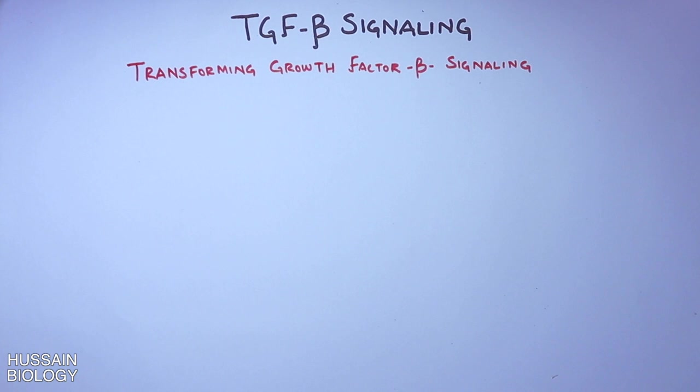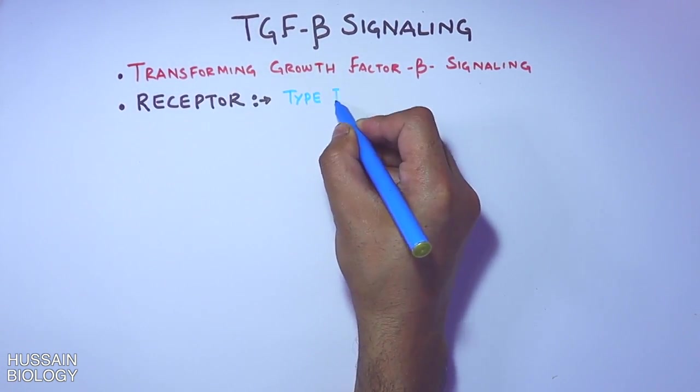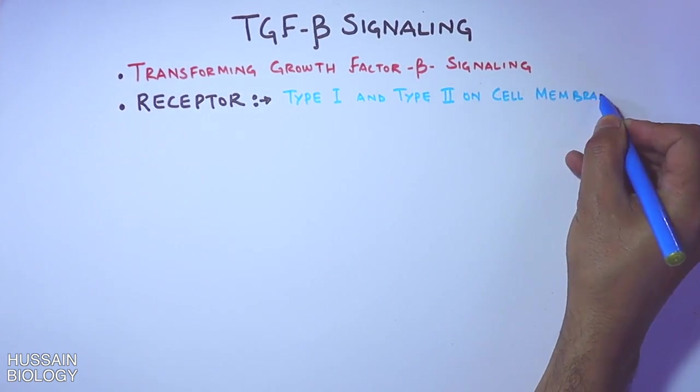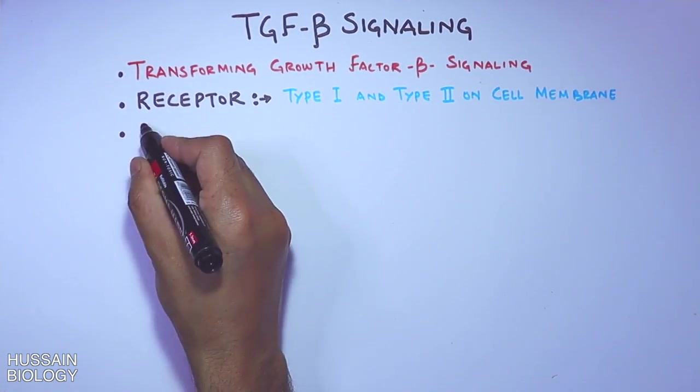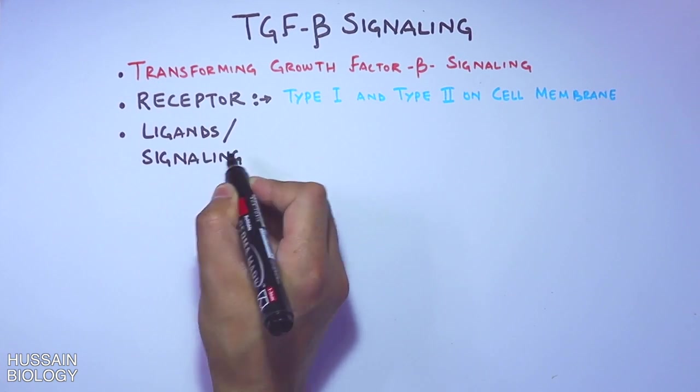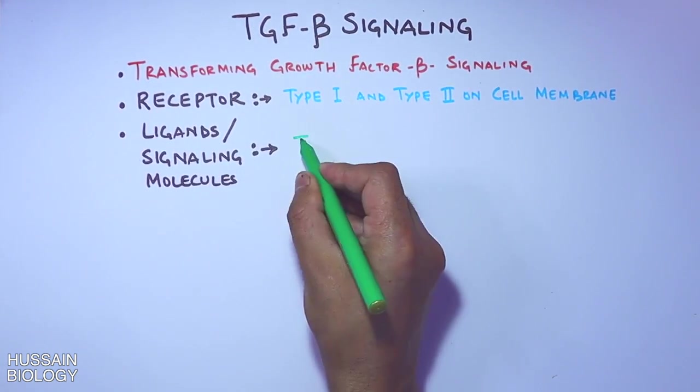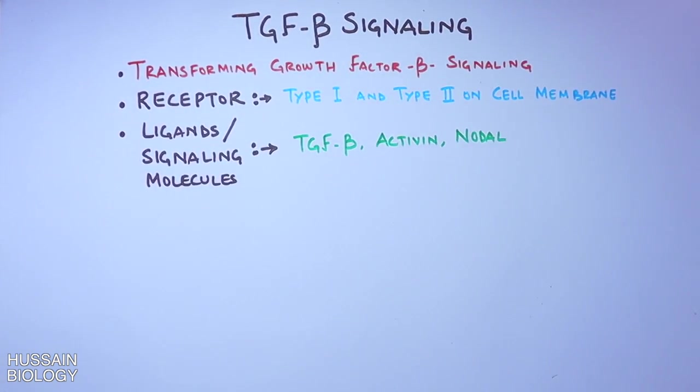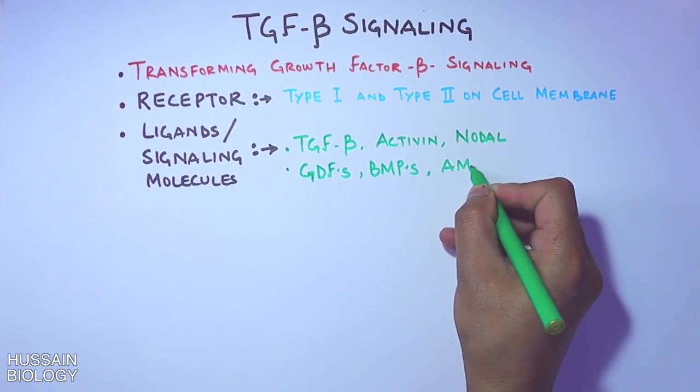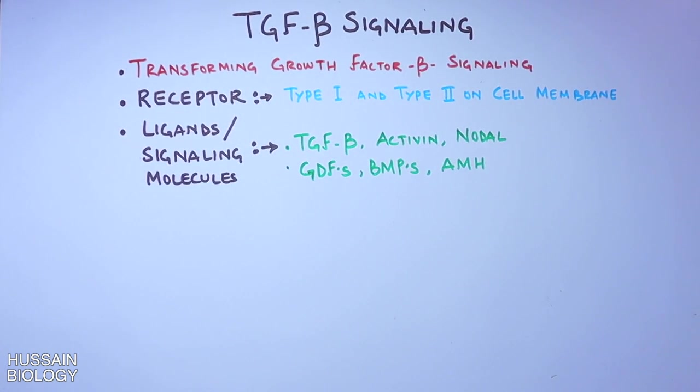In this signaling pathway, we have plasma membrane bound receptors - Type 1 and Type 2 receptors on the cell membrane. Second, we have the ligand or signaling molecules for this receptor: TGF, Activin, Nodal, GDFs, BMPs, and AMH. These are the molecules or ligands that bind with the receptors and initiate the pathway.